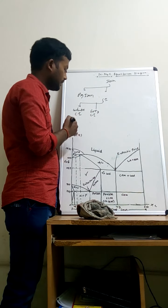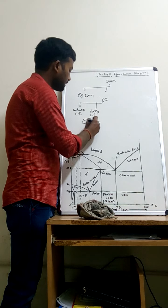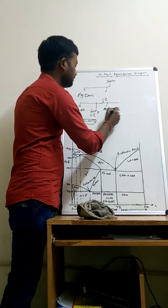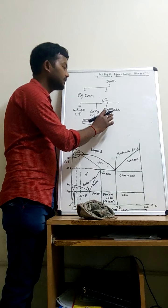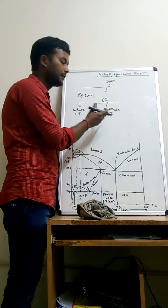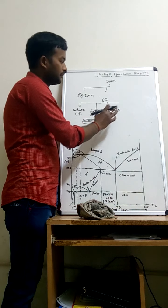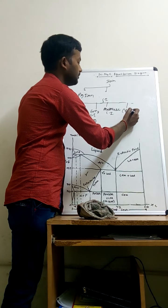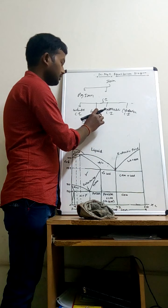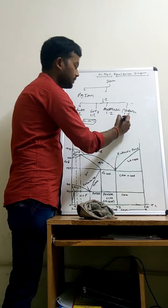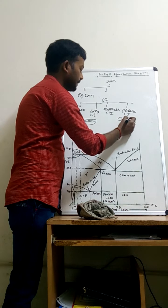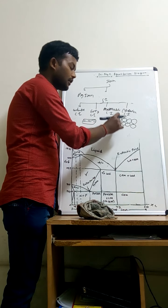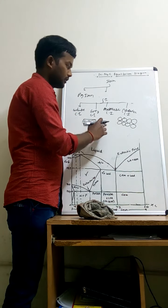In gray cast iron, the structure is laminar, so ductility will be more in gray cast iron. Third is malleable cast iron, which is made from white cast iron. Products such as cam shafts, cranks, and gears are made by malleable cast iron. Fourth is nodular cast iron, which is made from gray cast iron and has a spherical structure, so machinability is very easy because spherical shapes have better machinability than other shapes.